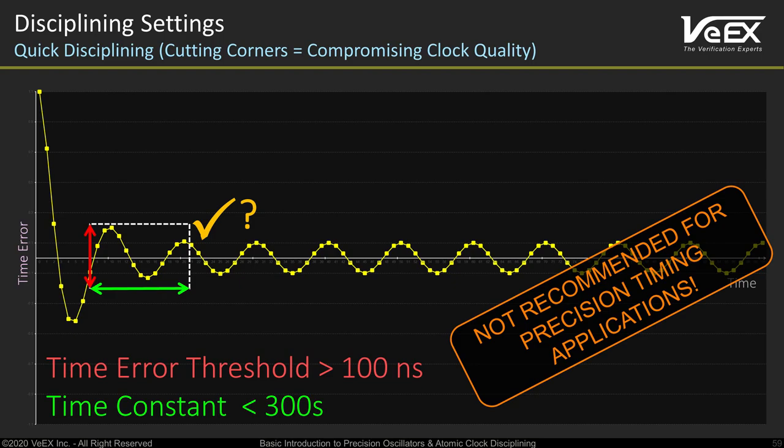In field test and measurement applications, there is always the temptation for a quick discipline cycle in the name of practicality. Unfortunately, some vendors may use very short time constants and high error thresholds to claim the fastest disciplining as an advantage. You should be suspicious when the time constant or the time error thresholds are hidden, as they may be a hint of poor clock quality. You should be the one making these choices, based on the application and the environment.